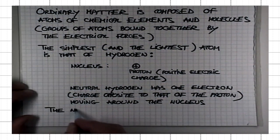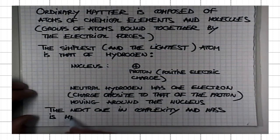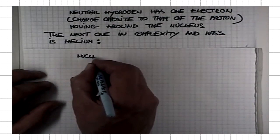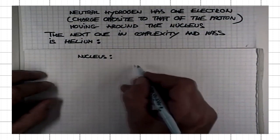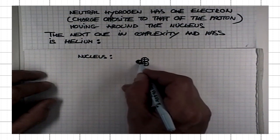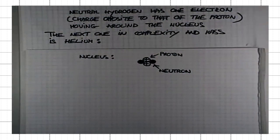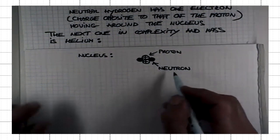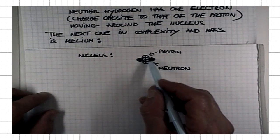The next one in complexity and mass is helium. The nucleus of helium consists of four particles — it has two protons and also two neutrons. An electrically neutral helium atom therefore has two electrons moving around the nucleus.